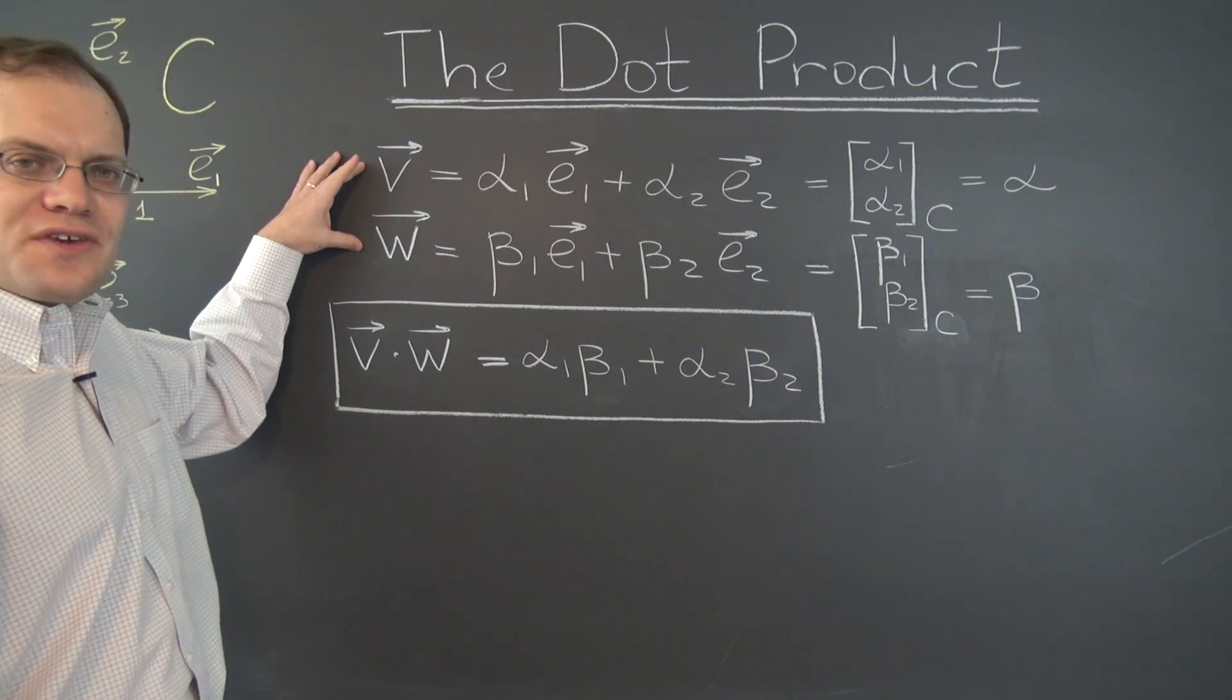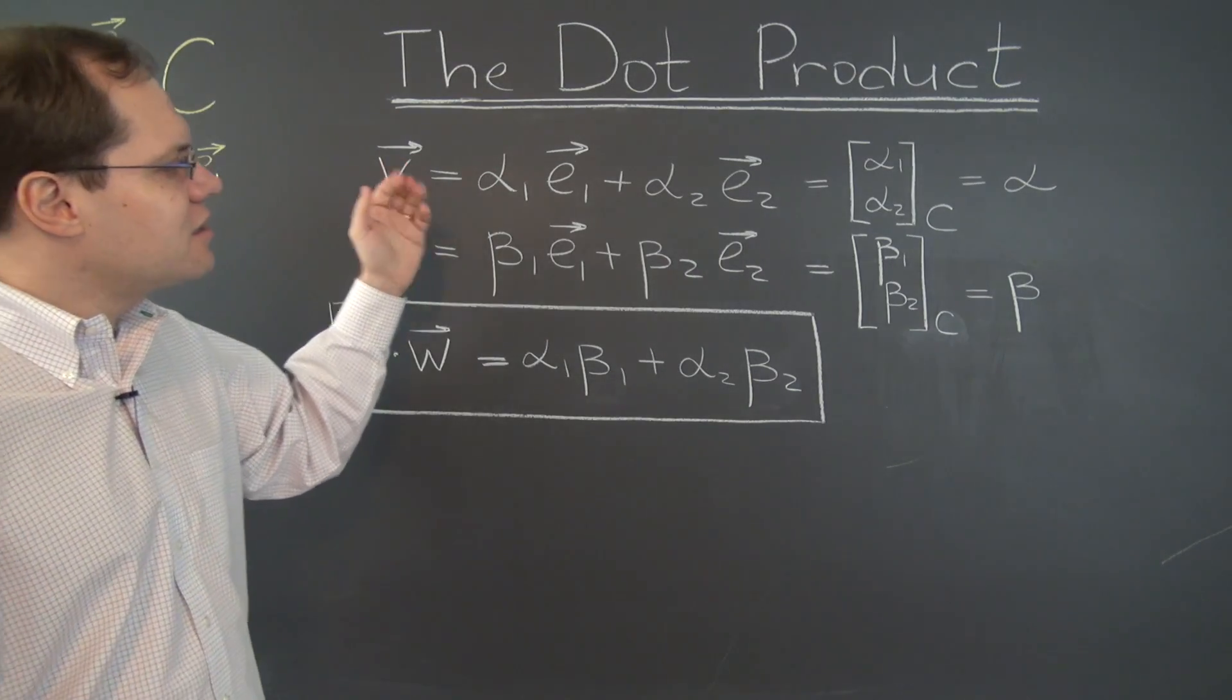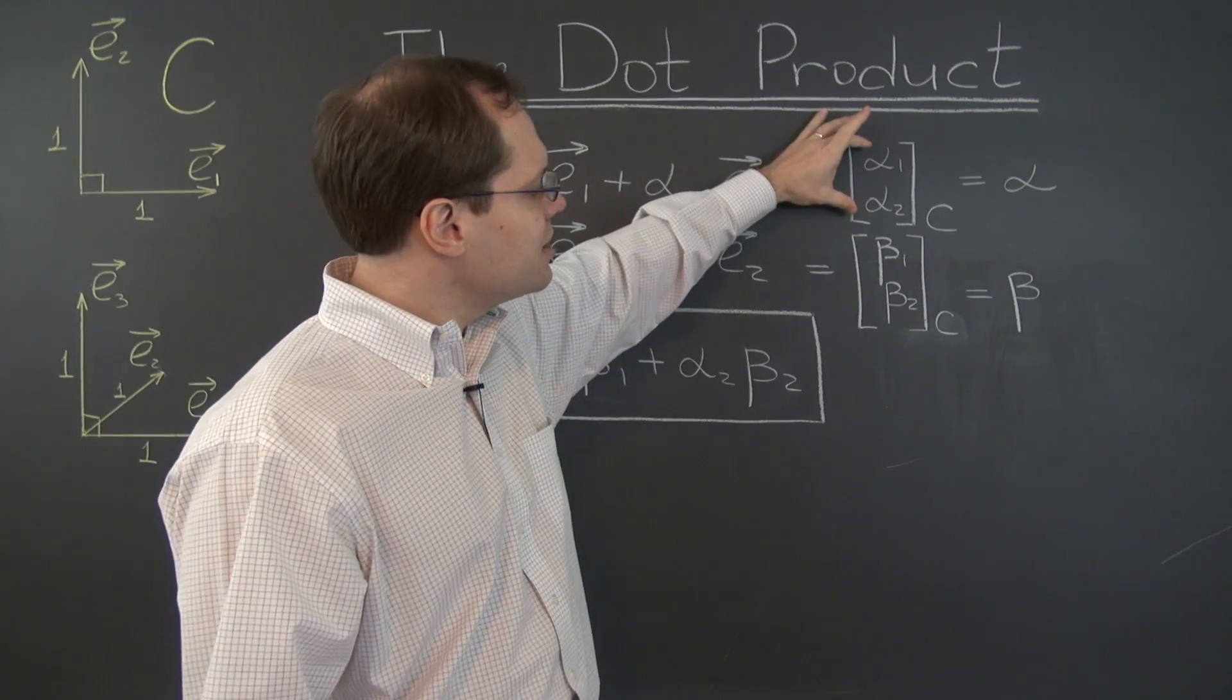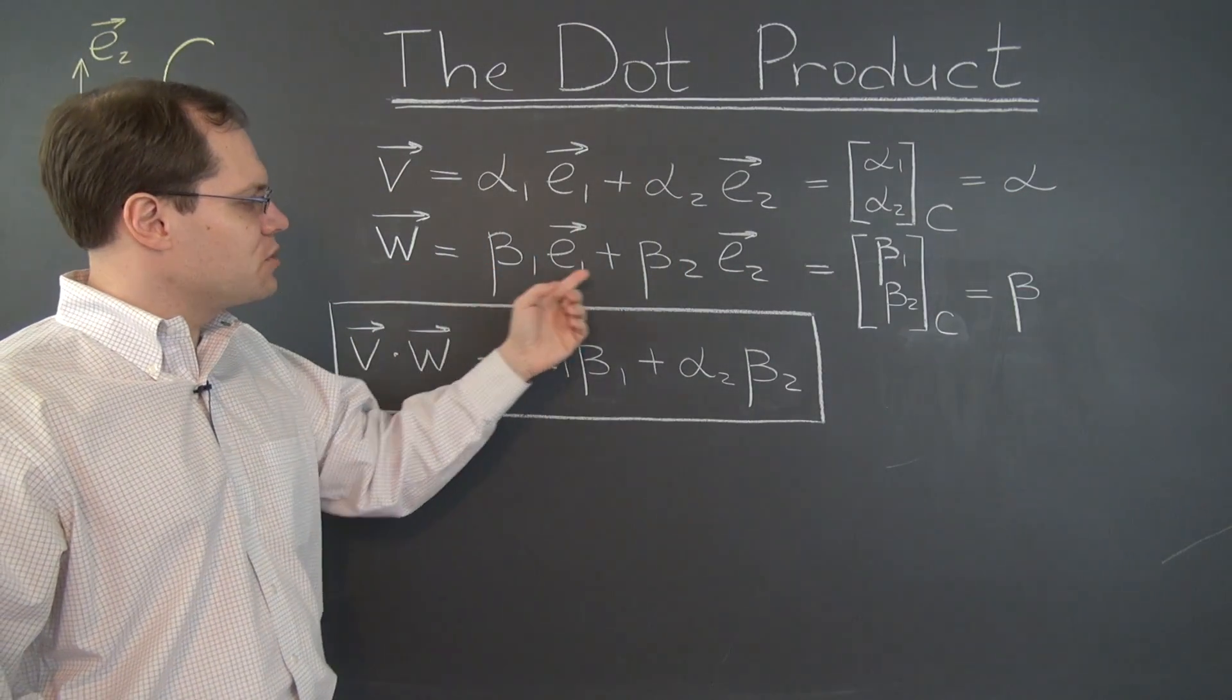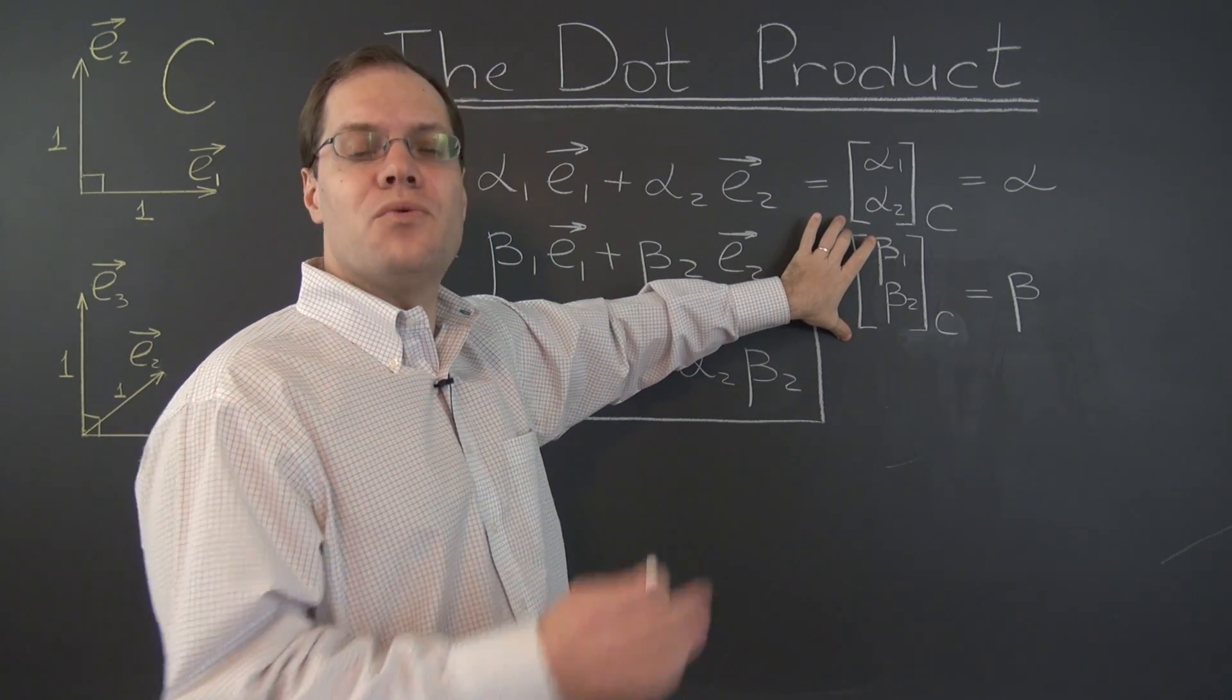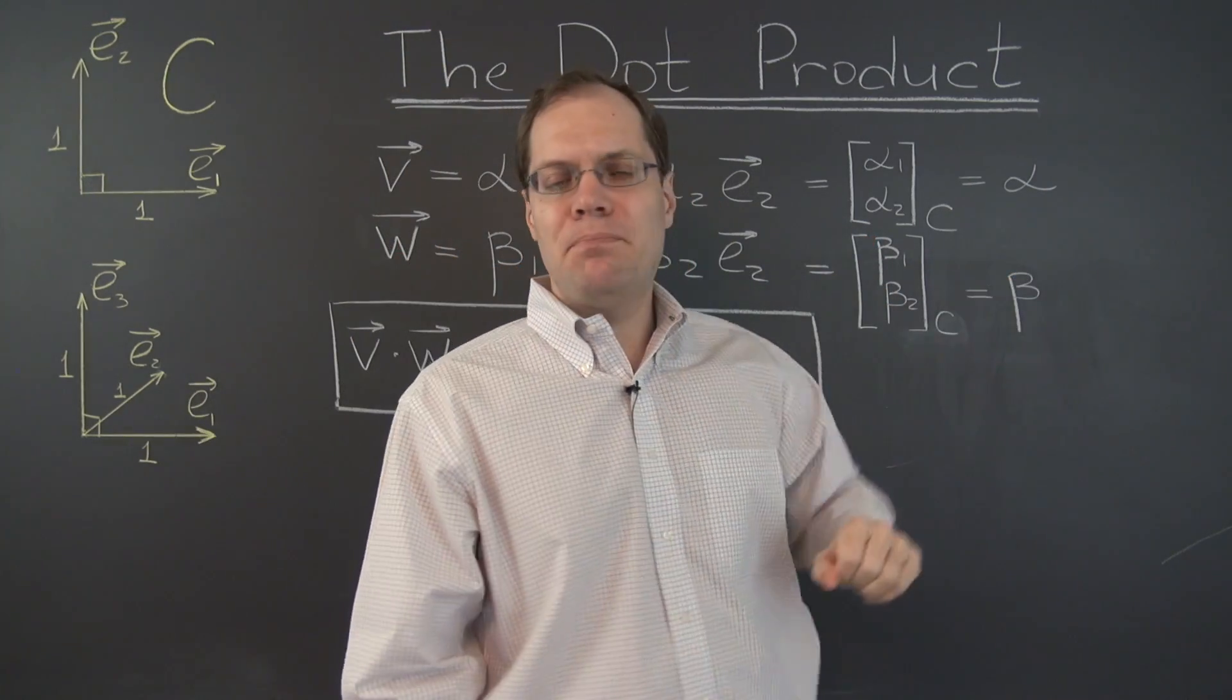We have two vectors v and w, each one is decomposed with respect to a Cartesian basis, and the components of the first vector are alpha1 and alpha2, organized into an R2 vector named alpha, and the vector w has components beta1 and beta2, also organized into this R2 vector. We'll in a moment think of it as a 2 by 1 matrix, and we call this one beta.